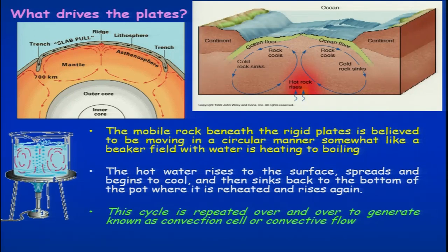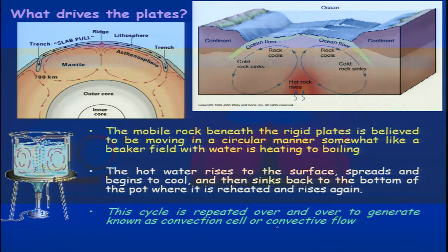This can be understood with a soap solution on a beaker on a burner — the hotter ones come to the surface, cool down, and go back down. This convection is similar to what occurs within the asthenosphere and is responsible for rolling the different plates, both continental and oceanic. This cycle repeats over and over, generating what is known as convection cells or convection flow.